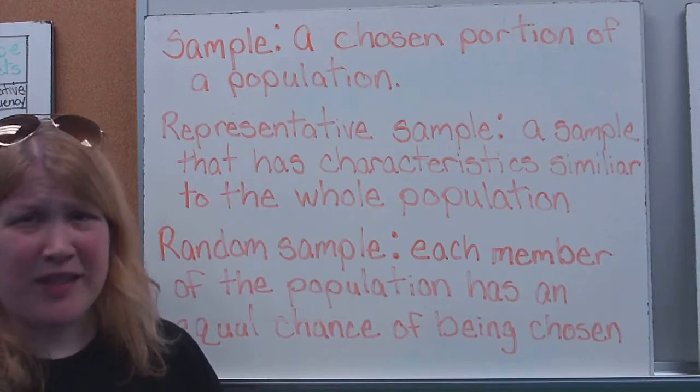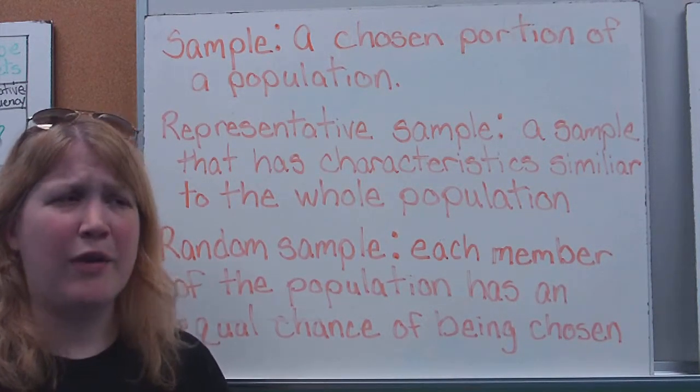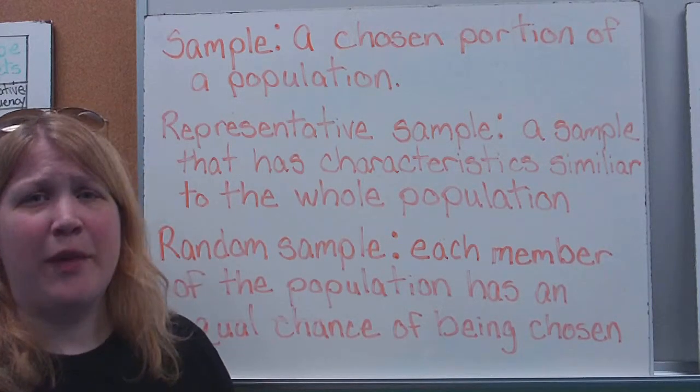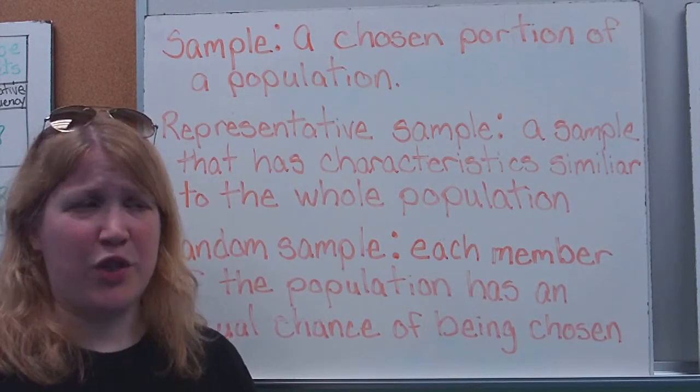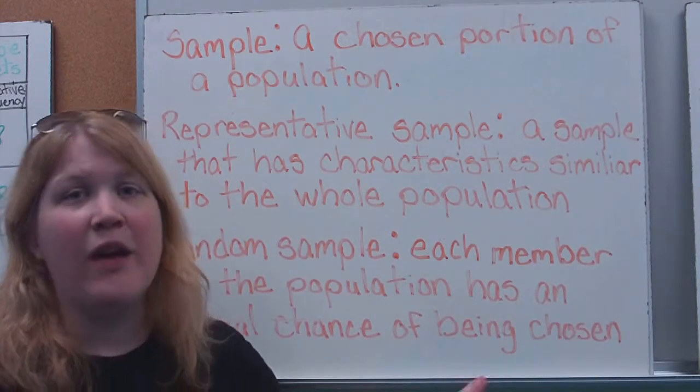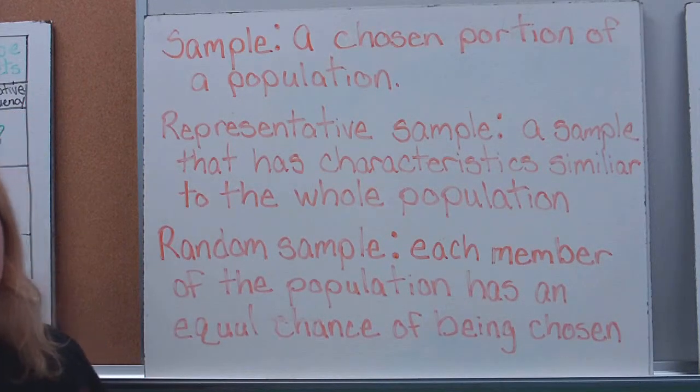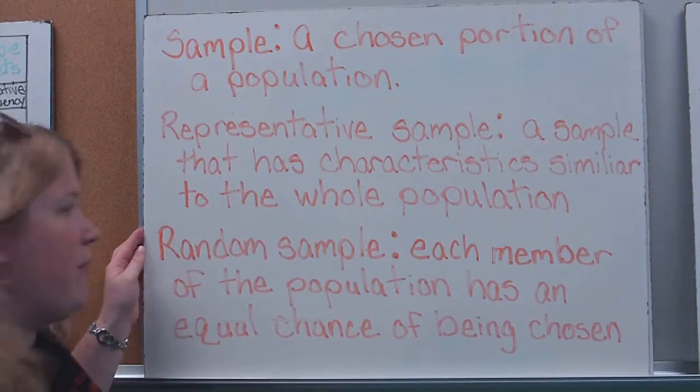A random sample is simply a sample where everybody has an equal amount of chance of being chosen. For example, a random sampling would be if I were to put everybody's name into a hat and pick a name at random to call on you. So, very random, everybody has an equal chance of being chosen for that. Make sure you get those down.